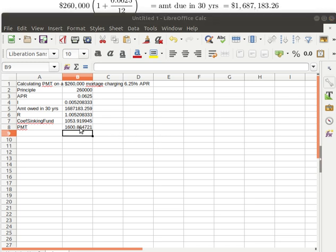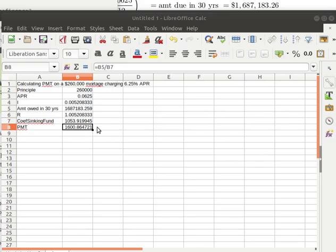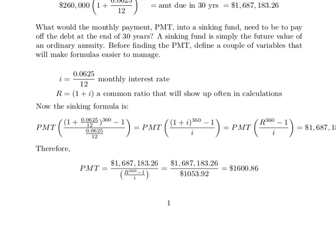Let's do some rounding on that. By watching the flow of the money — if the money just grew for 30 years without any payments, and then setting up a sinking fund over those same 30 years to pay that off — we were able to calculate the monthly payments, which need to be over $1,000. Our monthly payments are $1,600.